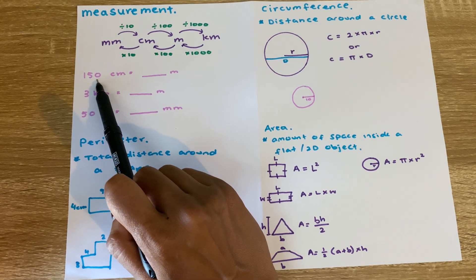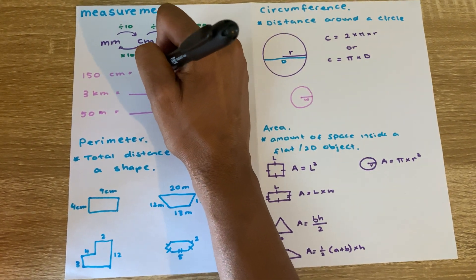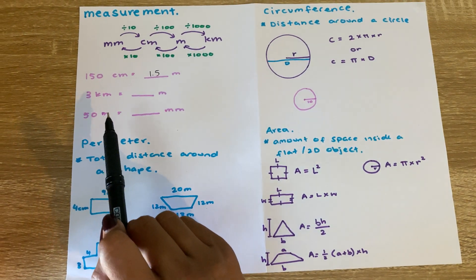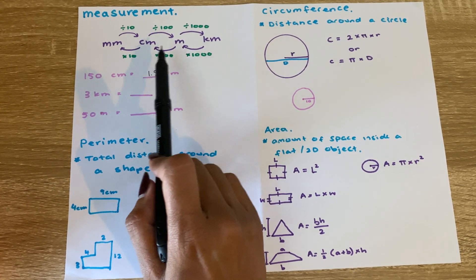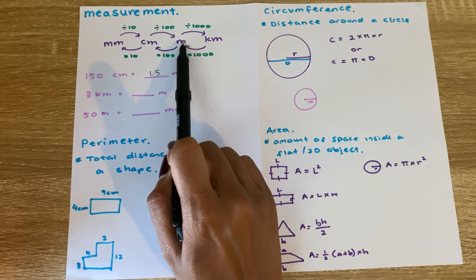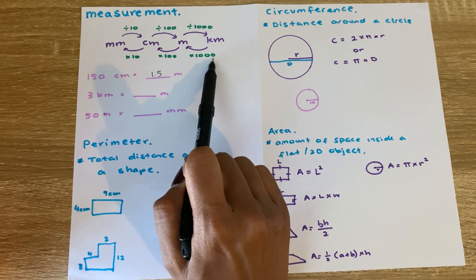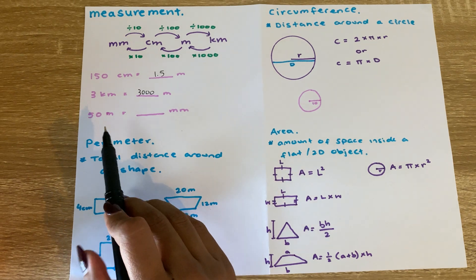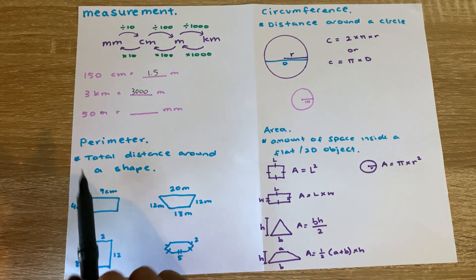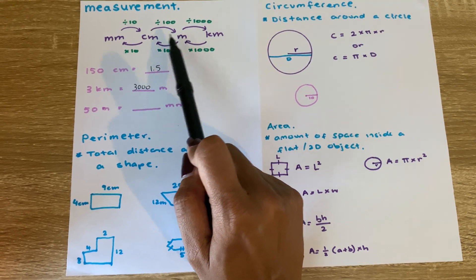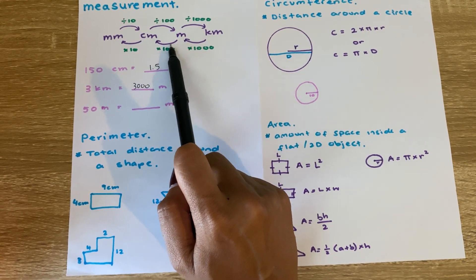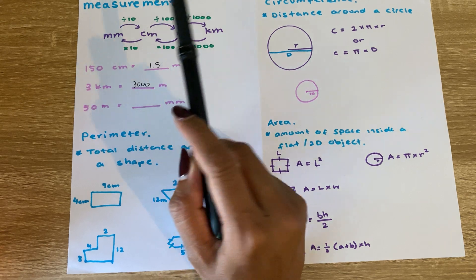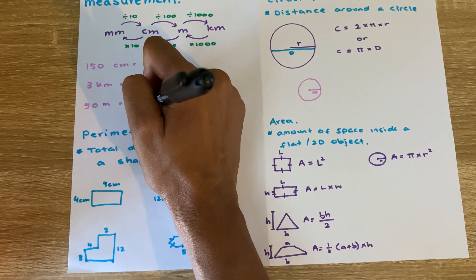So 150 divided by 100 equals 1.5, meaning 150 centimeters is 1.5 meters. Next: 3 kilometers to meters — we're multiplying by 1,000, so 3 times 1,000 is 3,000 meters. For 50 meters to millimeters, meters to millimeters means we times by 100 and then by 10, so 50 times 100 times 10 is 50,000 millimeters.